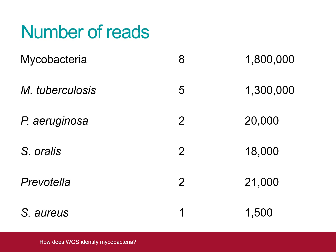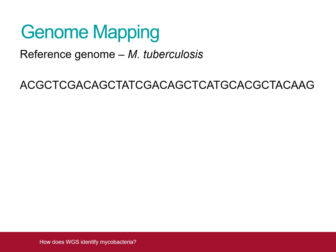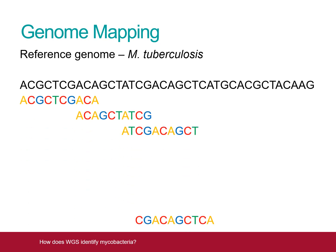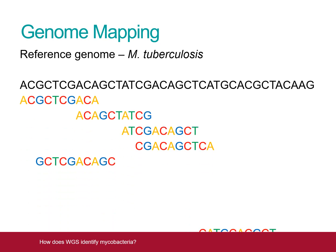Now that we know which bacteria is present in the largest amount, the sequencing system can choose a matching reference genome — in this case for TB — and try to line up all of the words in the sample against it. This process is known as mapping.